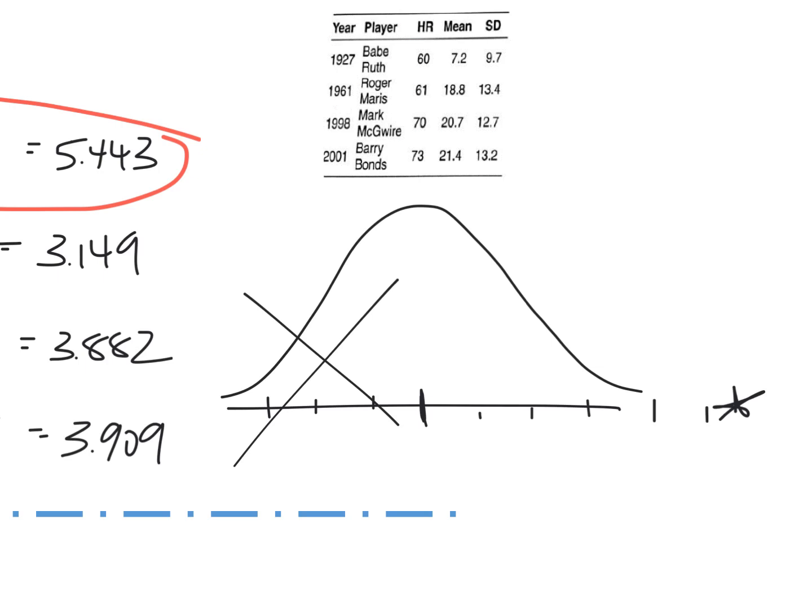Roger Maris, he was 3.1 something, so he's right here, RM. I'm going to label this Babe Ruth. He's the best, he wins. And then Mark McGwire is almost four, MM. And then again, a little bit beyond that, Barry Bonds, right at four pretty much.